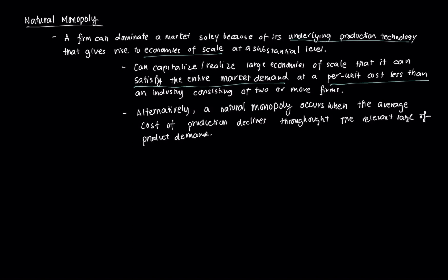The monopolist, being just one firm, can feasibly serve all consumers at a lower cost than if the market acted perfectly competitively or oligopolistically. Alternatively, a natural monopoly occurs when the average cost of production declines throughout the relative range of product demand.